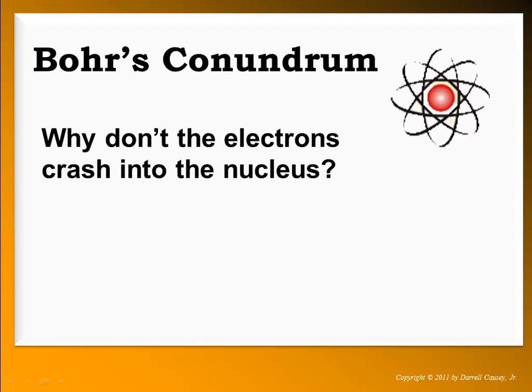Bohr's conundrum dealt with why don't the electrons crash into the nucleus, because opposites attract. We had the Rutherford model, or the nuclear model, which suggested that we had this positively charged nucleus with these electrons in the atomic space. The atom was considered mostly space, and these electrons were negative while the nucleus was positive. Why aren't the electrons attracted to the nucleus? Why aren't they crashing into it and destroying it, or having matter fall apart? That just wasn't happening.